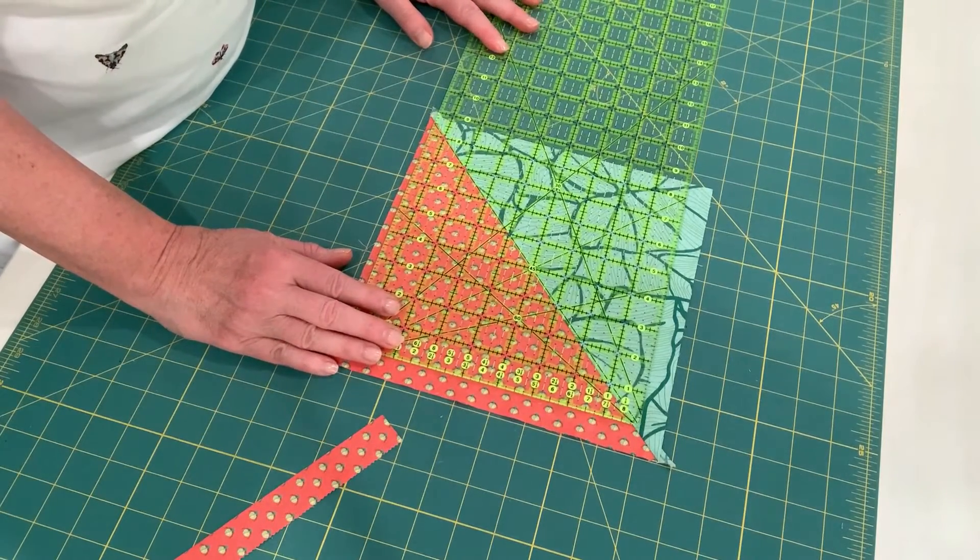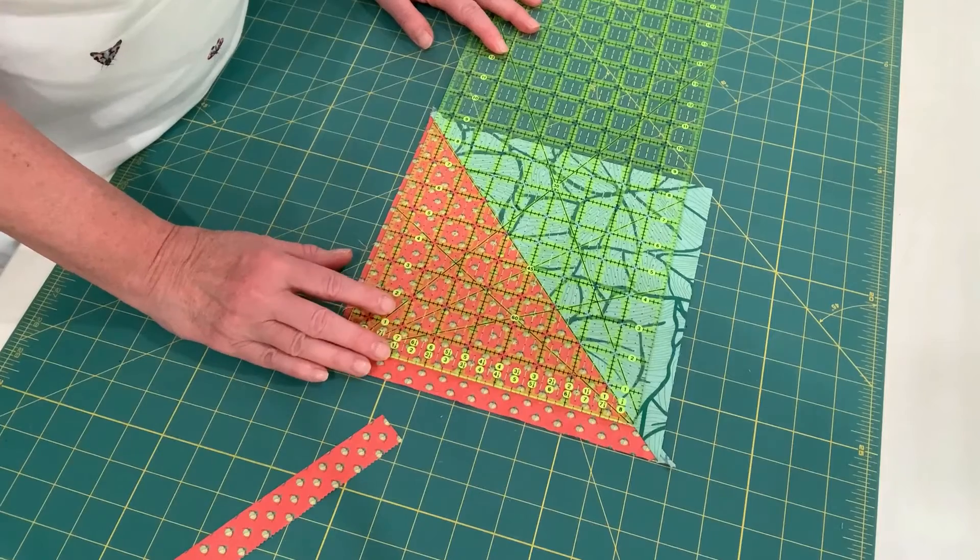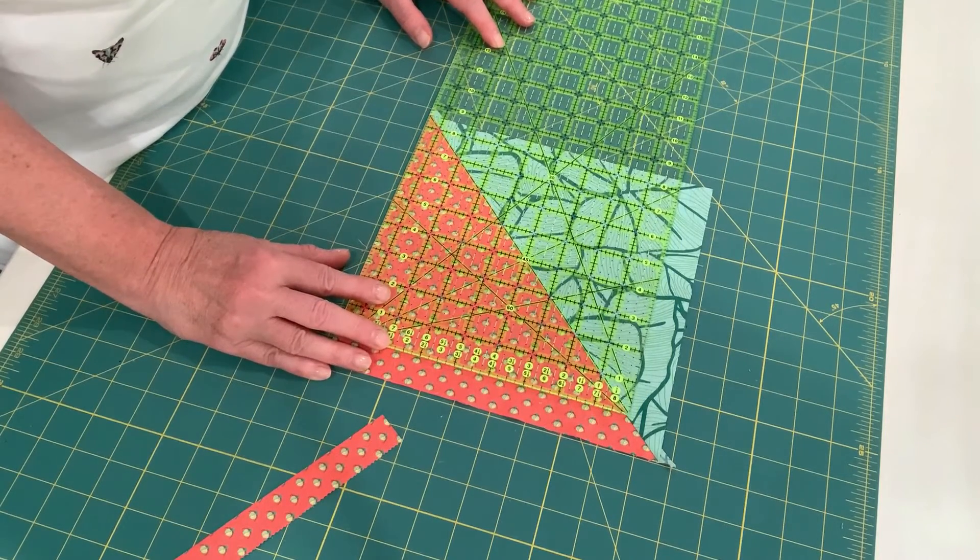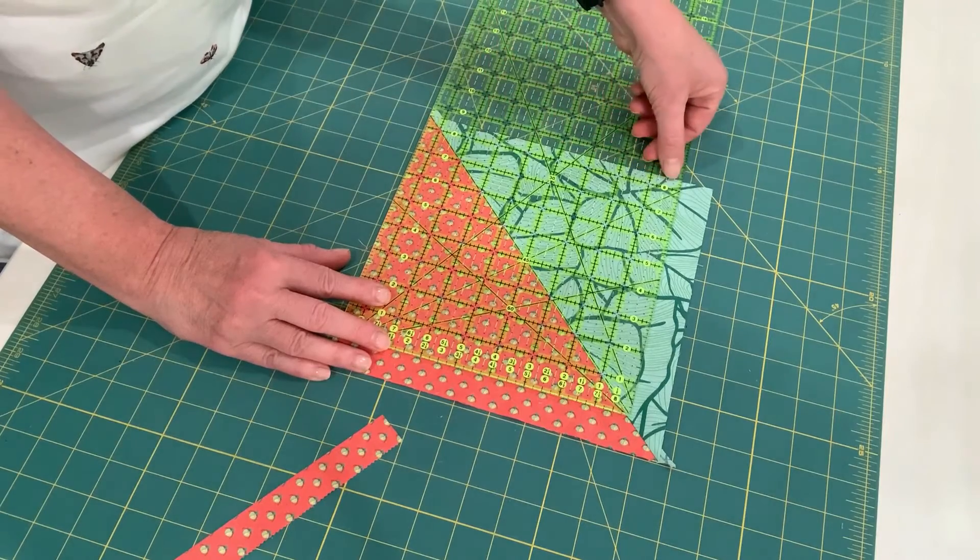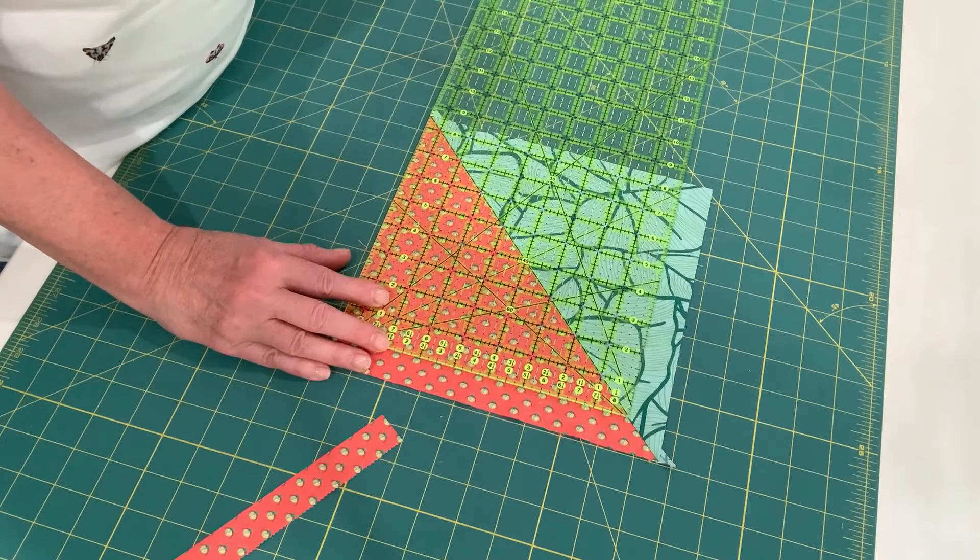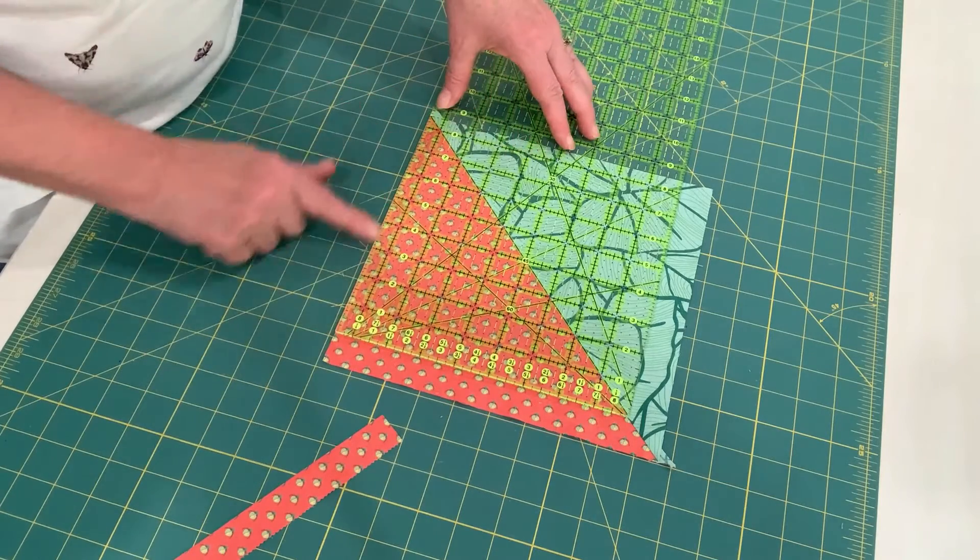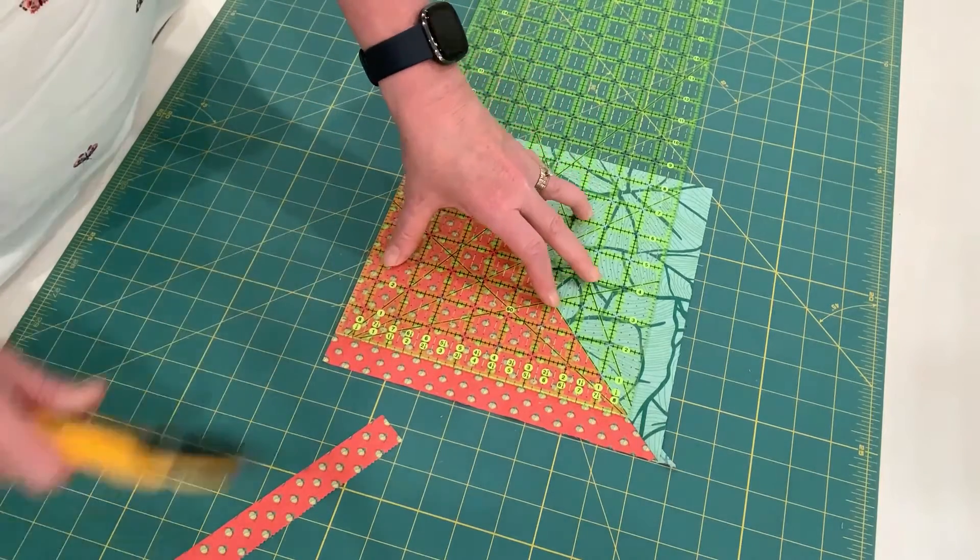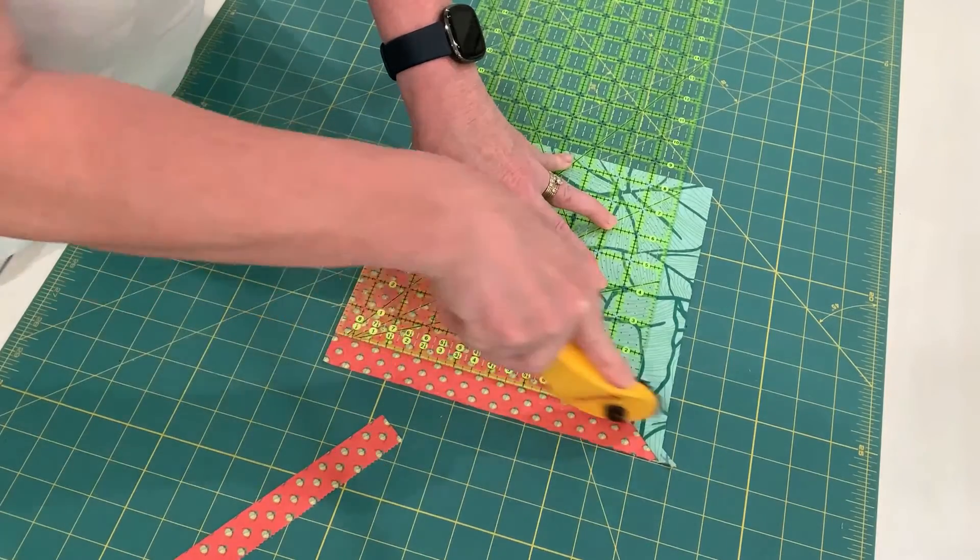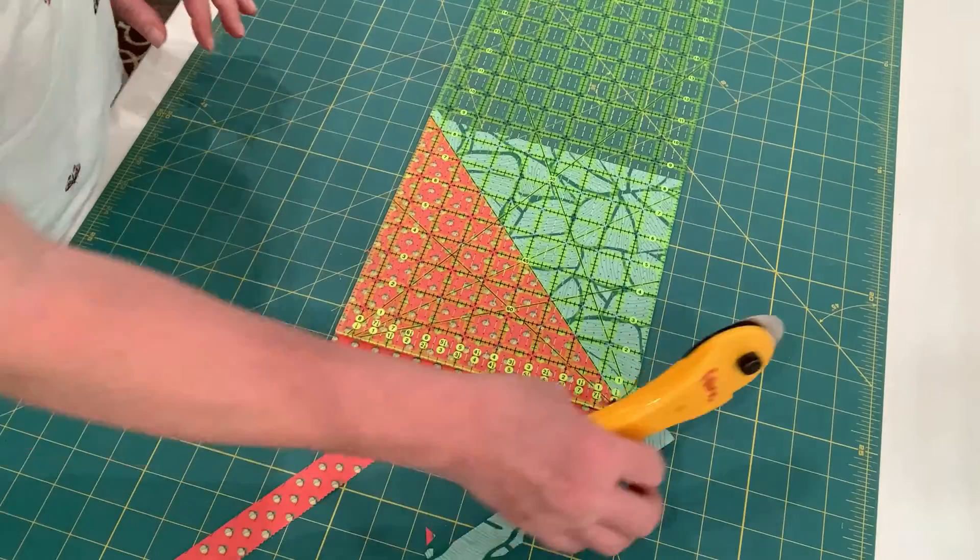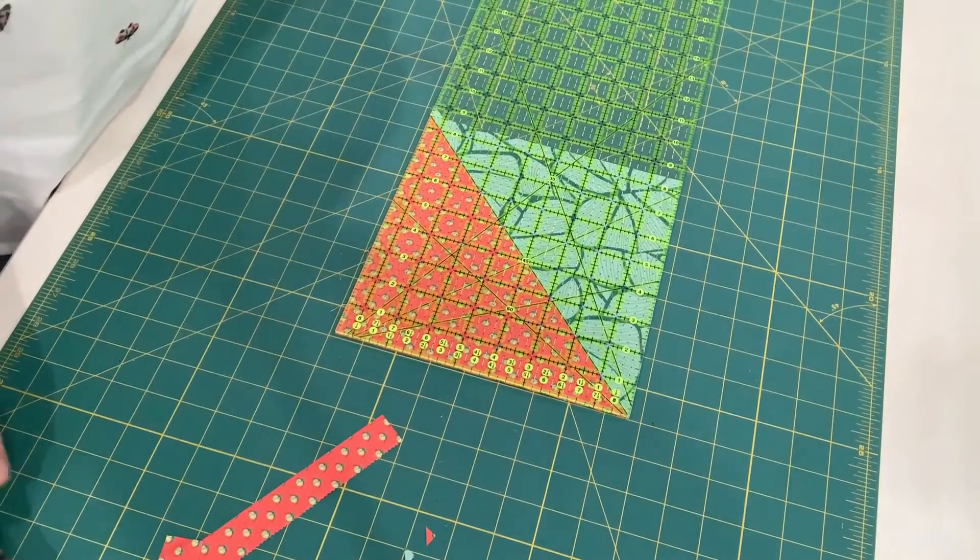So I'm going to take that 45 degree angle, and I'm going to place it on the center line of the block. And then adjust the ruler so that this edge here is even with the 8 1⁄2 inch measurement. And it's 8 1⁄2 inches this way. So if I trim off this side and this side, I now have an 8 1⁄2 inch square.